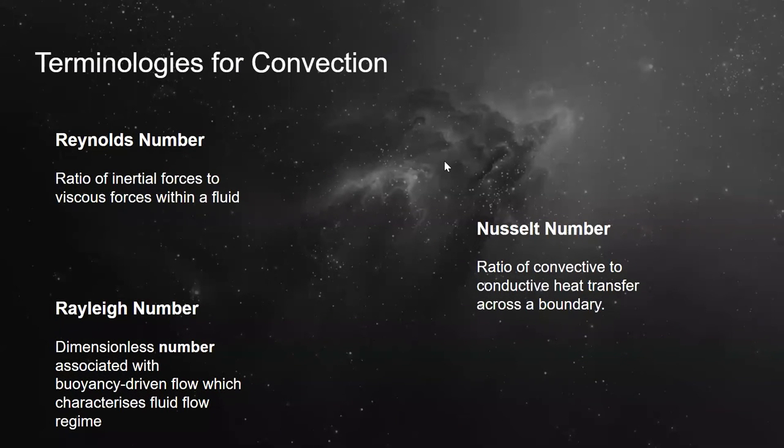We have made use of the following numbers in our calculation of convective heat transfer coefficient for these structures. The Rayleigh number is used in calculation of free convective heat transfer coefficient, whereas Reynolds number is used in calculation of forced convective heat transfer coefficient. Nusselt number correlations are used in both to get the final answers.